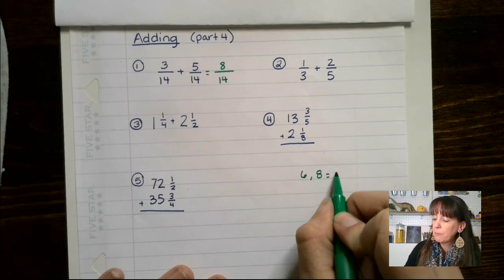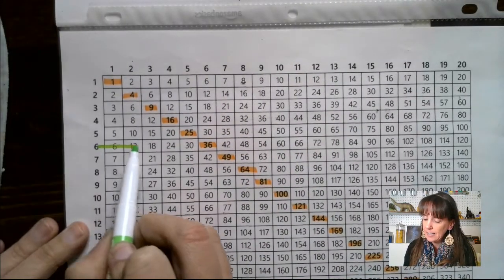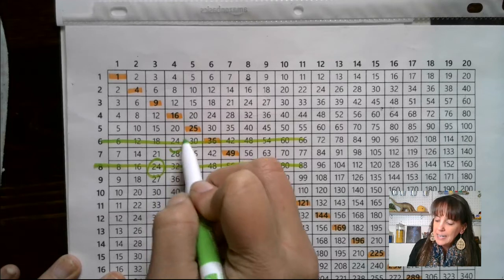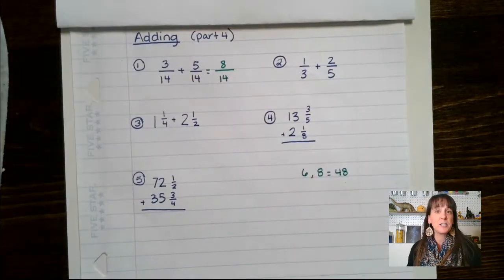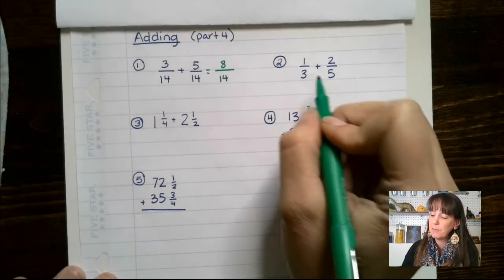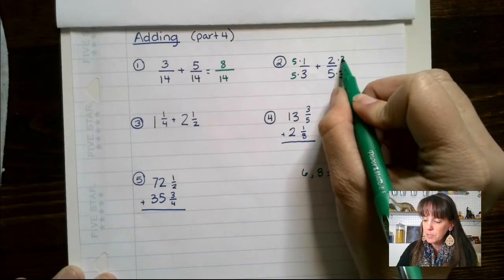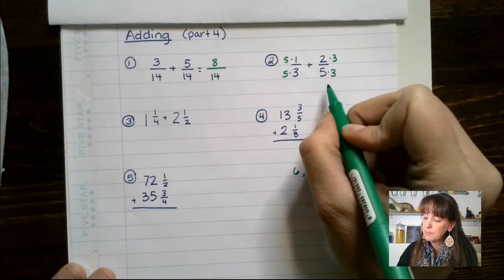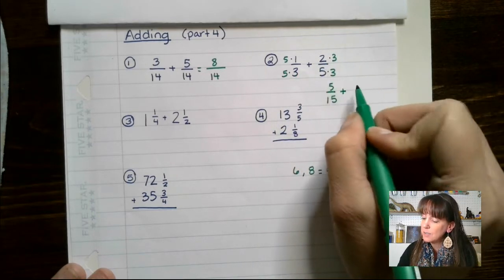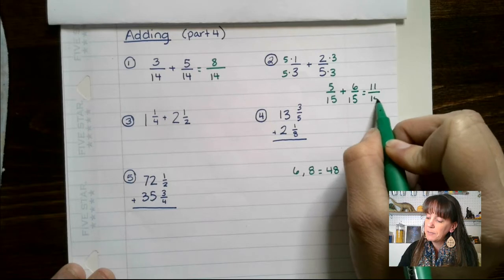You can't always just multiply the two denominators together — it will give you a common denominator, but you want the least common denominator unless you want to reduce later. For example, with 6 and 8, multiplying gives 48, but their least common denominator is actually 24. So for 3 and 5, we multiply them together: 15 is our common denominator. Whatever I multiply on the bottom, I must multiply on the top. So we get 5 over 15 plus 6 over 15, which gives us 11 fifteenths.